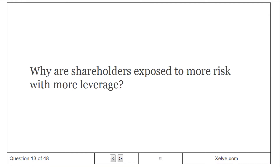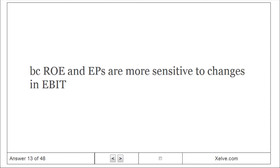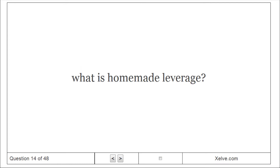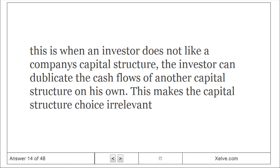Why are shareholders exposed to more risk with more leverage? Because EPS and ROE are more sensitive to changes in EBIT. What is homemade leverage? This is when an investor does not like a company's capital structure. The investor can duplicate the cash flows of another capital structure on his own, which makes the capital structure choice irrelevant.